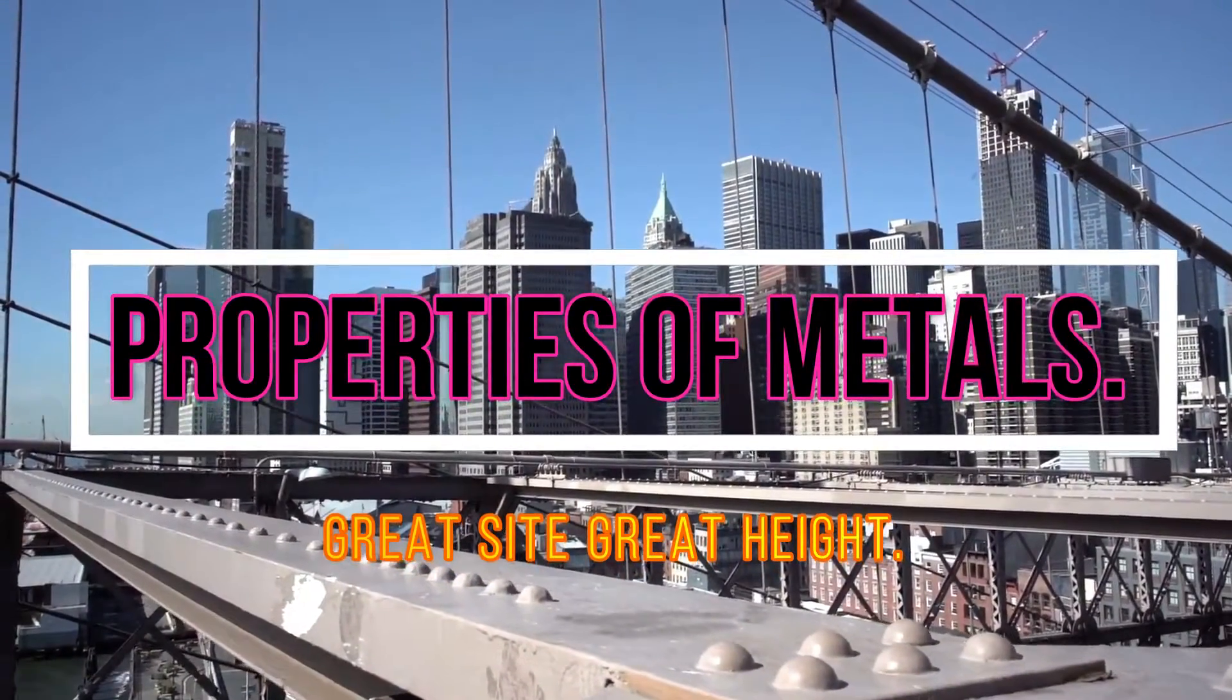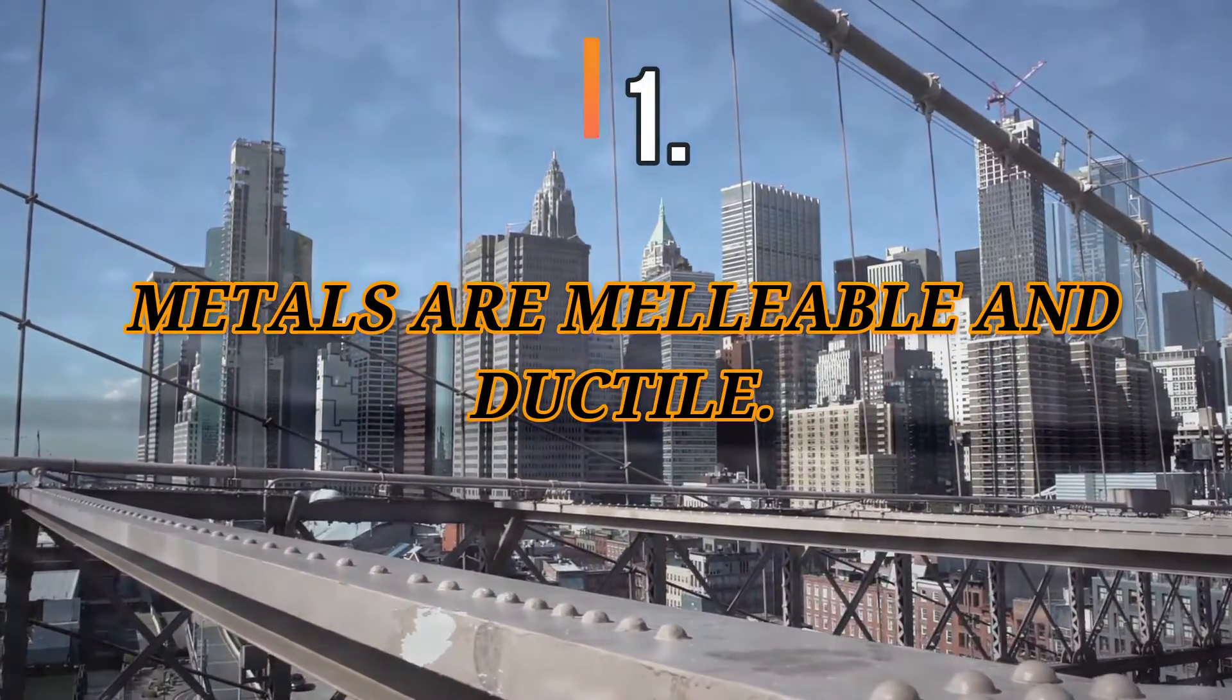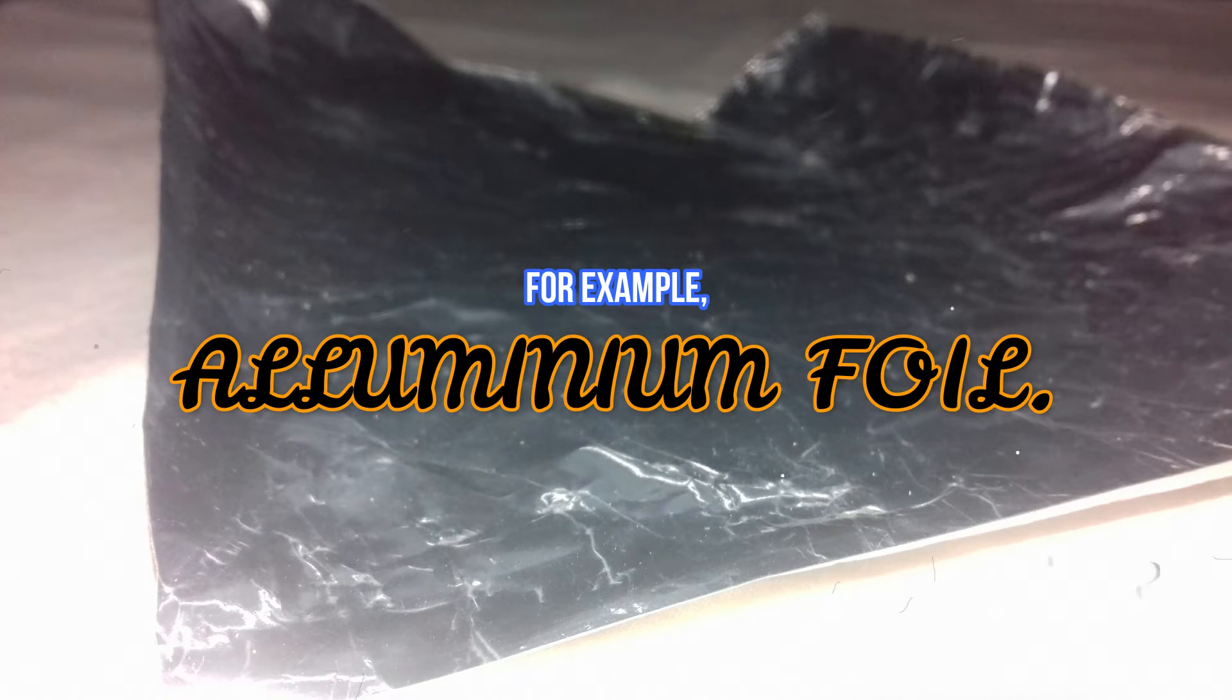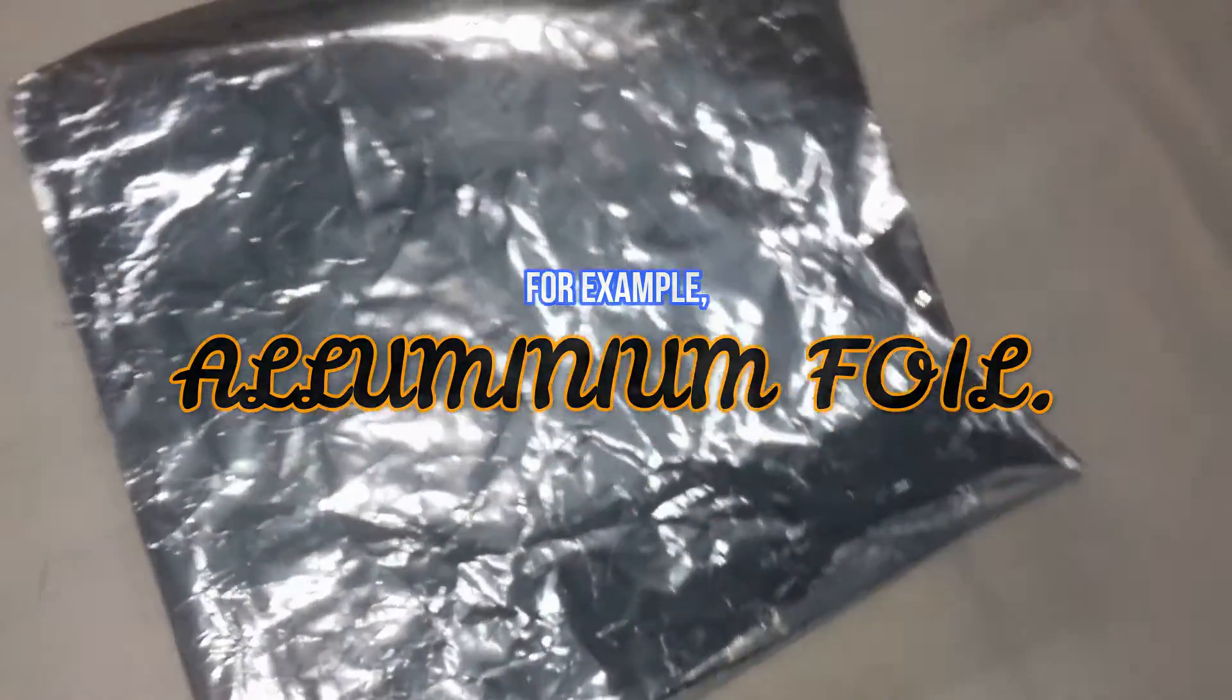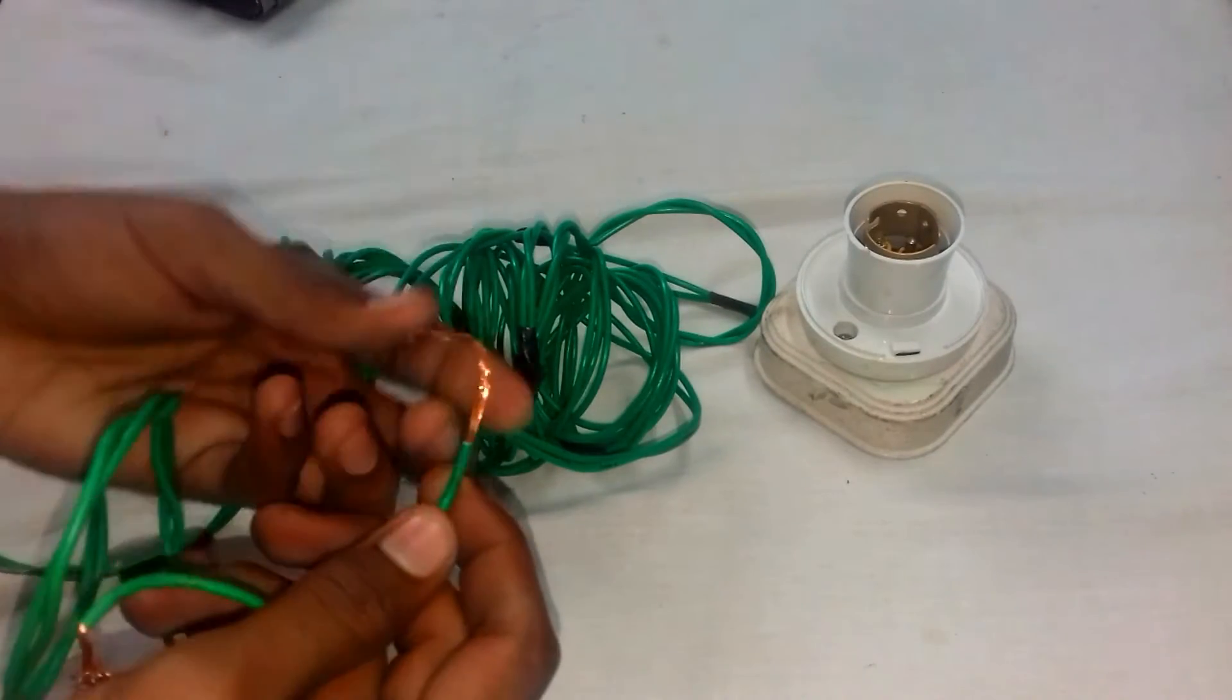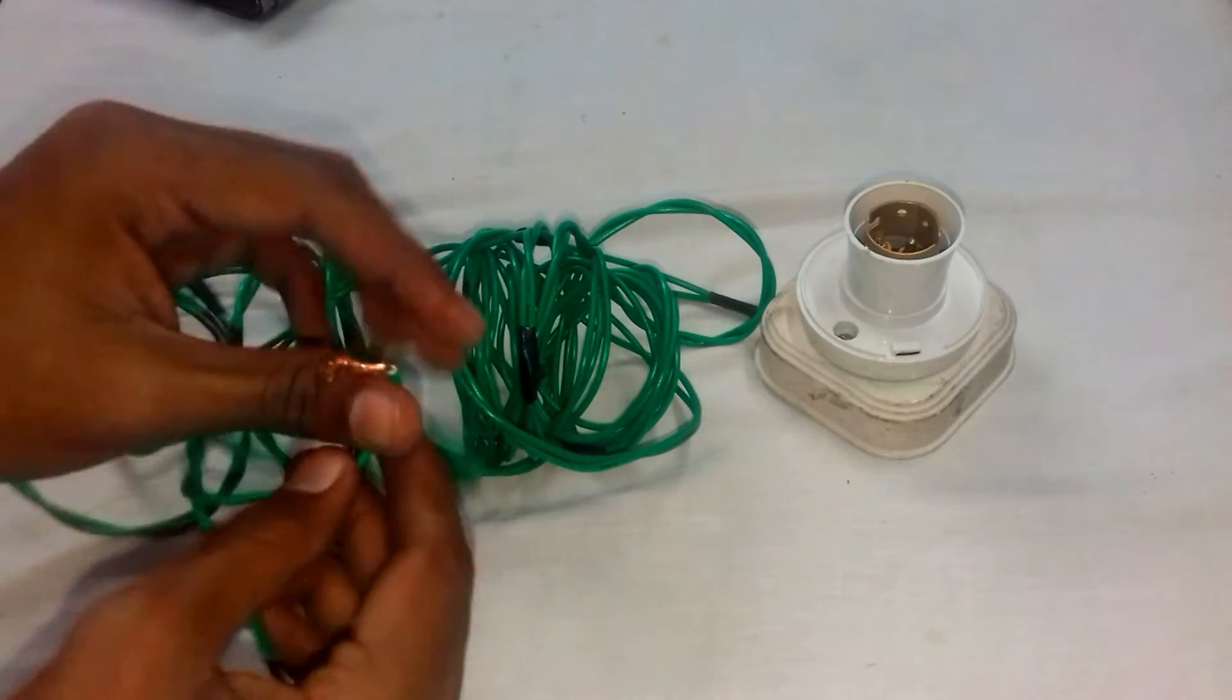Properties of metals: Metals are malleable and ductile. Malleable means they can be beaten into thin sheets, whereas ductile means they can be drawn into thin wires. For example, aluminium foil, which is beaten into such thin foil from aluminium. Another example of ductile is the copper wire which is used in our homes for electrical supplies.